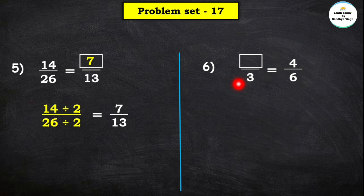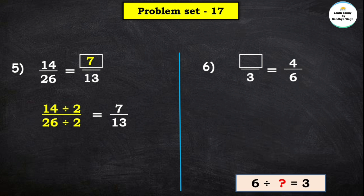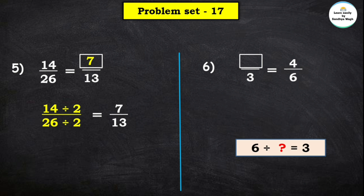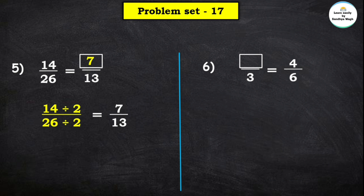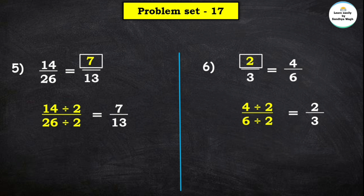Here we use division to find the first equivalent fraction. 6 divided by which number equals 3? We know that 6 divided by 2 equals 3. So with common divisor 2, we divide both numerator 4 and denominator 6 by 2: 2 twos are 4 and 2 threes are 6. Therefore 2 upon 3 is the equivalent fraction of 4 upon 6.